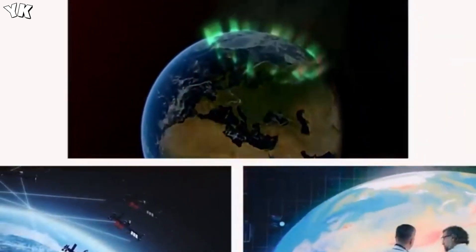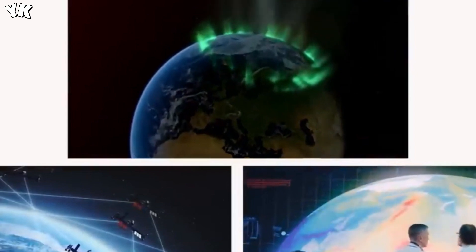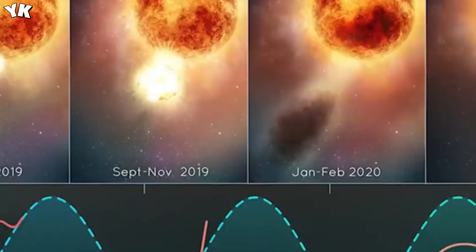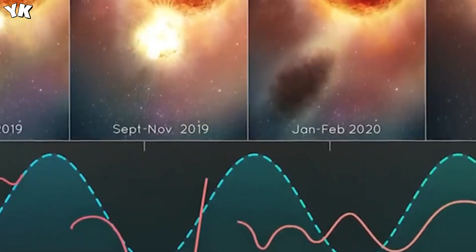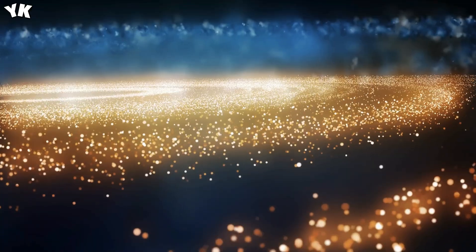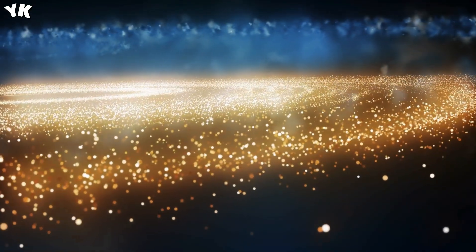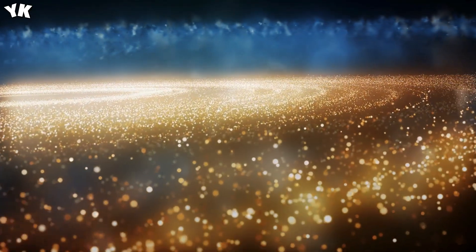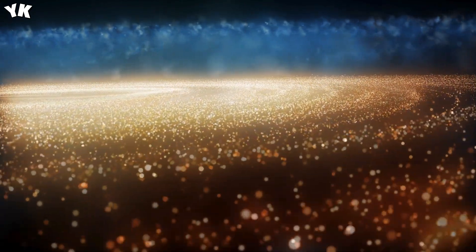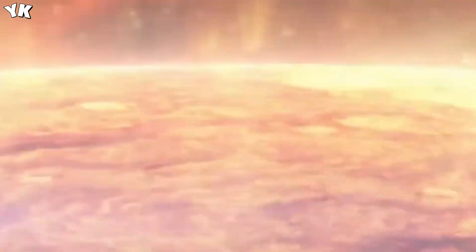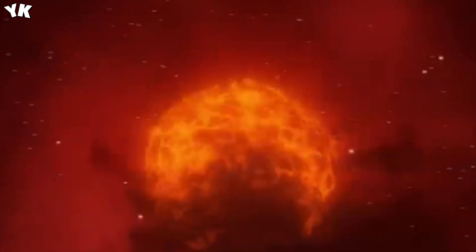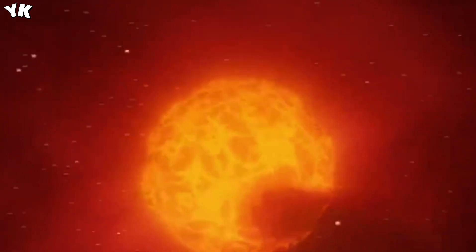So, is Betelgeuse on the brink of an explosive end, or just biding its time? Recent research by Japan's Tohoku University suggests that the star might be in its carbon-burning phase right now. Lead researcher believes that the core might collapse a few decades after its carbon reserves dry up. But not all scientists agree. Contrasting studies from Hungary's Konkoly Observatory speculate that Betelgeuse is still in the earlier helium-burning stage.